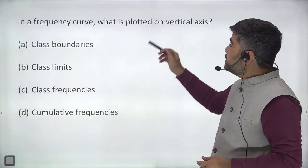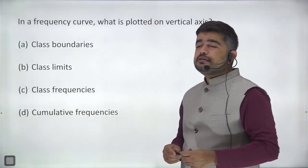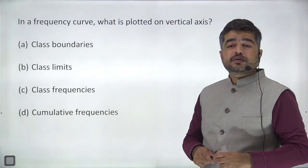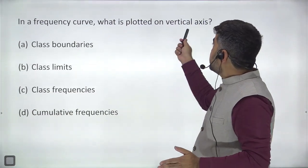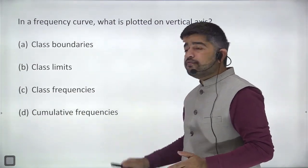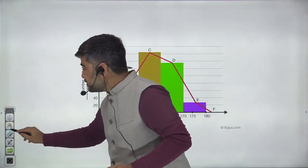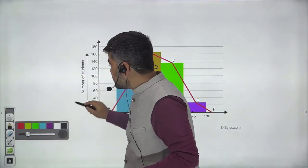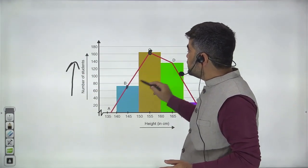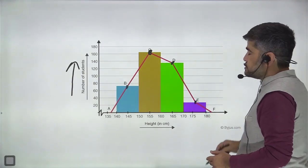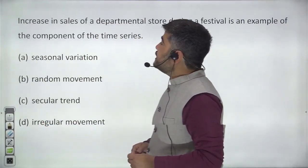Question four: in a frequency curve, what is plotted on the vertical axis? On the Y-axis we plot class frequencies. Sometimes students think it is cumulative frequency — no. In an ogive we use cumulative frequency, but in a frequency curve it will be class frequencies, representing the number of observations per class.